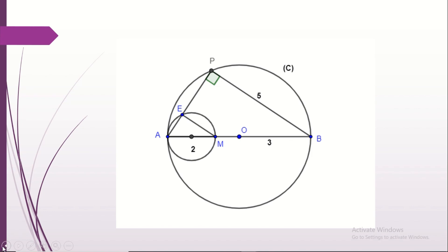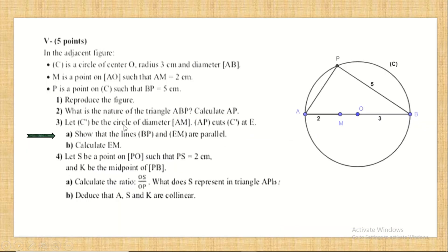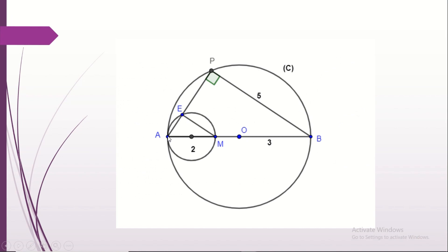Consider the circle C' of diameter AM. Line AP cuts circle C' at point E. Since E lies on circle C' and AM is the diameter, the inscribed angle AEM = 90°. Both EM and PB are perpendicular to the same line AP. Therefore EM is parallel to PB.